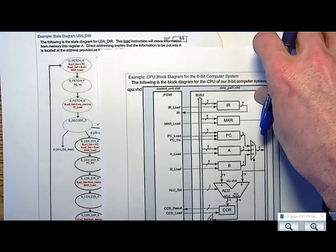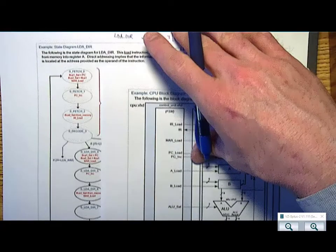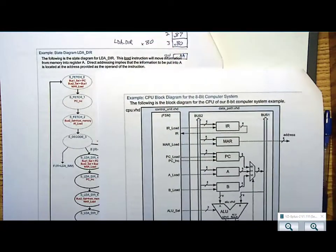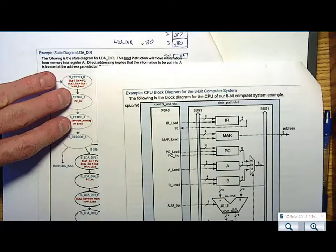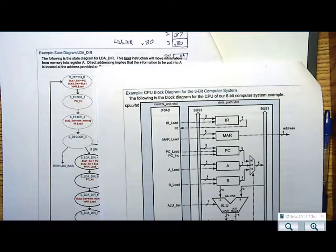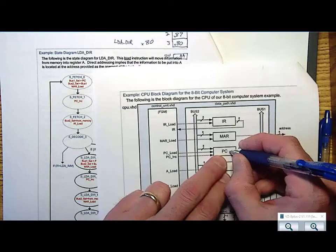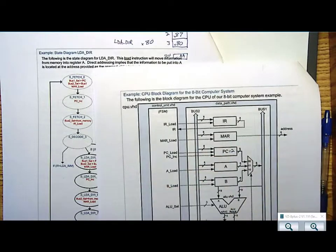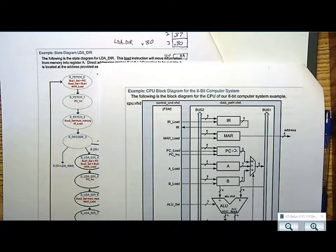All right, I come up to this thing and I say, all right, let's go. So I'm going to do a fetch. What does a fetch do? A fetch takes three states and it takes the program counter, which was already pointing at 2 because that's where it had to be left by the prior instruction.